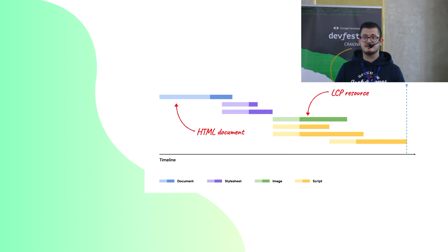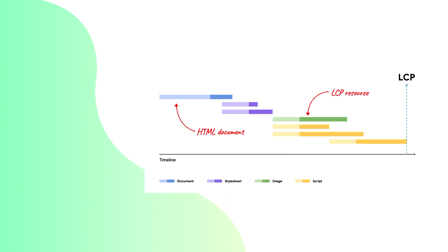A schema is always more explanatory and visual. In this schema, you have four colors: blue represents the initial HTML document, violet represents stylesheets, green represents an image that is an LCP resource, and yellow represents a JavaScript file. First, the browser loads your initial HTML document. When it finishes, it loads your stylesheets. Because the stylesheets depend on an image, when it finishes loading the stylesheets, it loads the LCP resource — here an image — in parallel with your JavaScript file. When the largest image or block of text is painted on the screen, we obtain the LCP score.